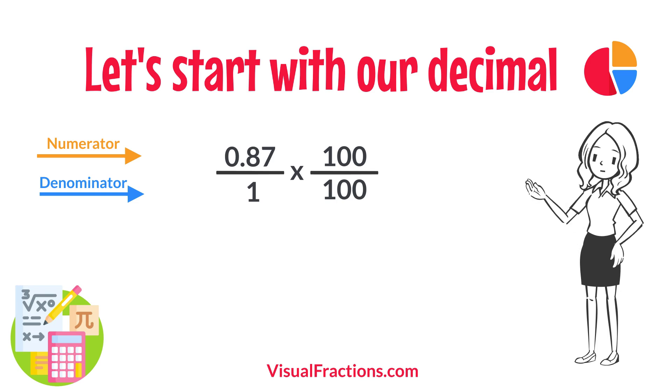So, 0.87 times 100 gives us 87, and 1 times 100 gives us 100. This translates 0.87 to the fraction 87 over 100.